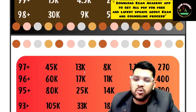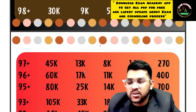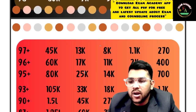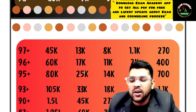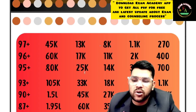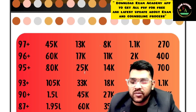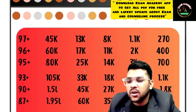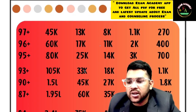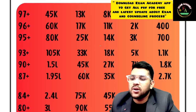First column is General, second is OBC, third is EWS, fourth is SC, fifth is ST. For 95 percentile — General: 80,000, OBC: 25,000, EWS: 14,000, SC: 3,000, ST: 700. For 93 percentile — General: 1,05,000, OBC: 33,000, EWS: 18,000, SC: 5,000, ST: 1,100. For 90 percentile — General: 1.5 lakh, OBC: 45,000, EWS: 27,000, SC: 7,000, ST: 1,800.